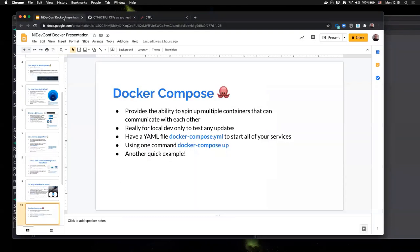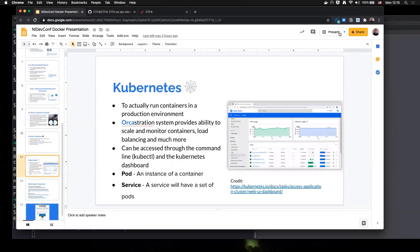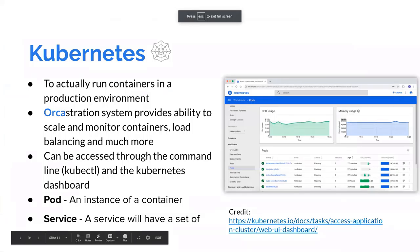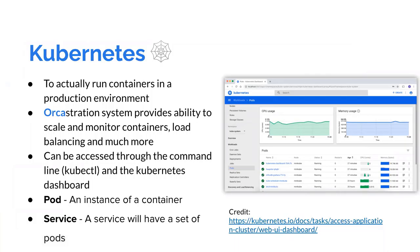The last thing I want to briefly touch on is Kubernetes. For using Kubernetes, it's what you should really be doing to run your containers in a production environment. It's an orchestration system that provides the ability to scale and monitor the health of your containers, and has a lot more functionality than that also. It provides a command line tool called kubectl and gives you the ability to manage your containers. It also has a dashboard where you can view metrics such as CPU usage and memory usage. Some key terms to be aware of with Kubernetes are the pod — it's the name of an instance of a container — and a service, which will just have a set of pods.